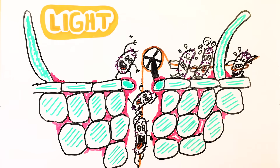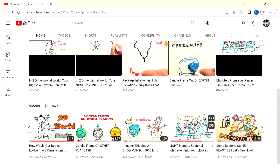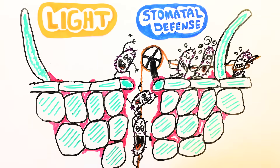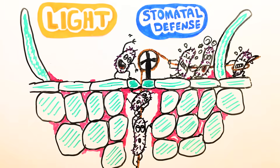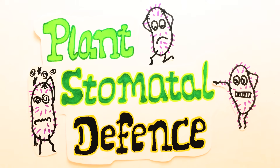In our previous video we showed that microbes can manage to infiltrate the plant leaves when the stomatal pores are open. I put the link of that video in the description below. In this video I'm going to show you how the plant can defend itself against this microbial invasion — it's actually a cool battle, so watch it to the end.